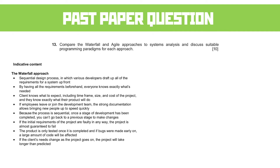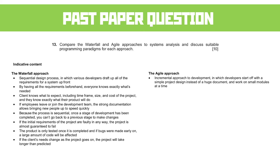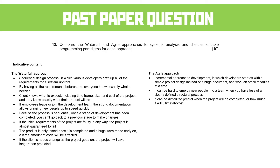If the client's needs change, the project will take longer because we can't just add an extra bit — we have to go all the way back to analysis and work through those stages again. The agile approach is different: it's an incremental approach in which developers start with a simple idea and work on small modules. It can be hard to employ new people once underway because there's less of a clearly defined process — we don't really know the big picture yet, so it's difficult to just sit somebody down and say 'off you go.' It can also be difficult to predict when the project will be completed or how much it ultimately costs.